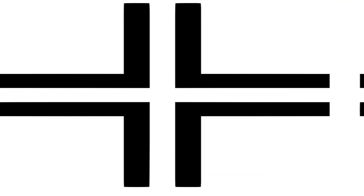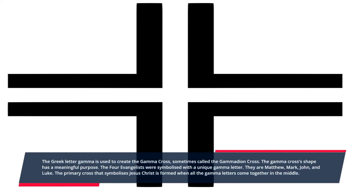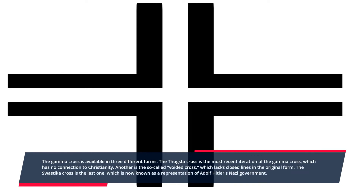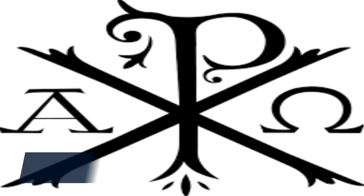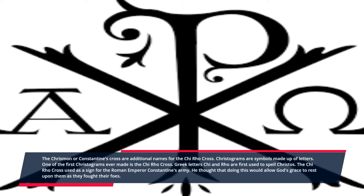Number five: the Gamma Cross. The Gamma Cross, sometimes called the Gammadion Cross, is created using the Greek letter Gamma. The four Evangelists — Matthew, Mark, John, and Luke — were each symbolized with a unique Gamma letter, and when all the Gamma letters come together in the middle, they form the primary cross symbolizing Jesus Christ. It is available in three forms, including the voided cross and the swastika cross, the latter now associated with Adolf Hitler's Nazi government.